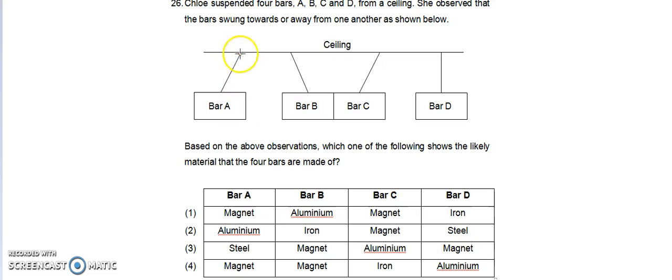Well, since A and B are actually repelling from one another, A and B are both magnets. C is a magnetic material that attracts itself to B and bar D is a non-magnetic material.